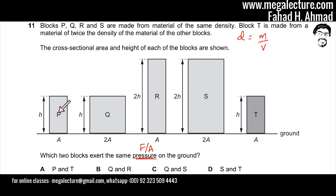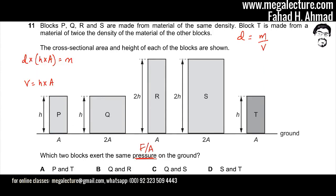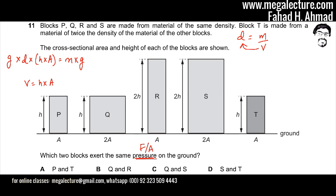Starting with block P: first I find volume, which is cross-sectional area times height, so V = H × A. Then mass = density × volume = D × H × A. Force is weight, so I multiply mass by gravity G, giving force = D × H × A × G. Pressure is force over area, so I divide by the cross-sectional area A.